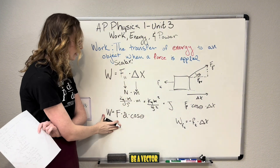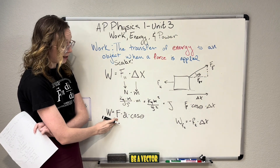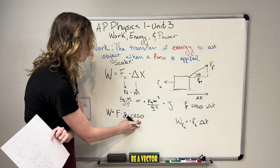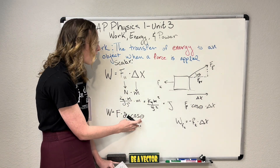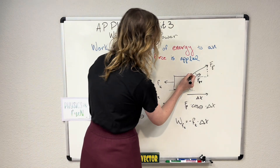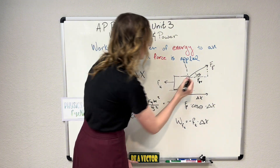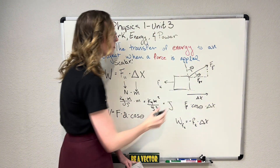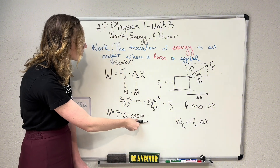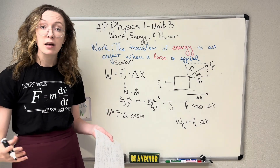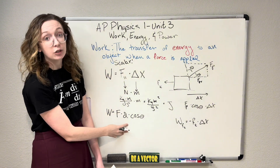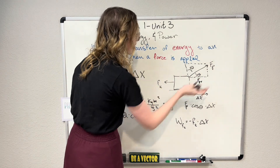Unlike with forces, a negative sign in work doesn't indicate direction — it means energy is being taken away from the system. One more issue with W = Fd cosθ: depending on how theta is measured, the parallel component might not always be cosine theta. If the angle is measured from the y-axis instead of the x-axis, you'd use sine theta. So always be clear about what theta represents — it exists to isolate the component of force parallel to displacement.